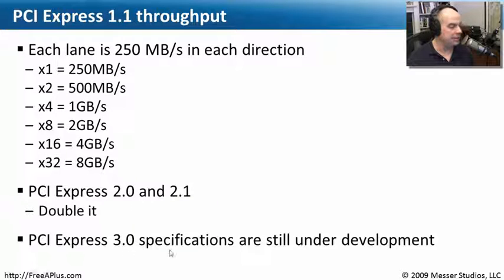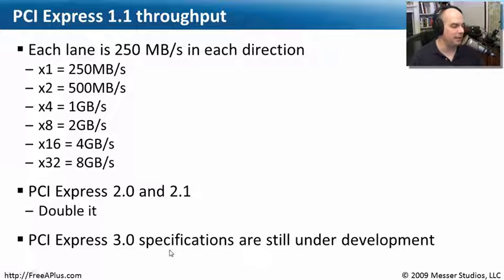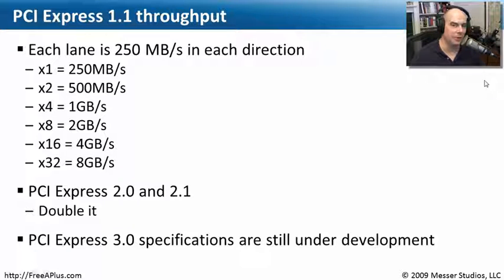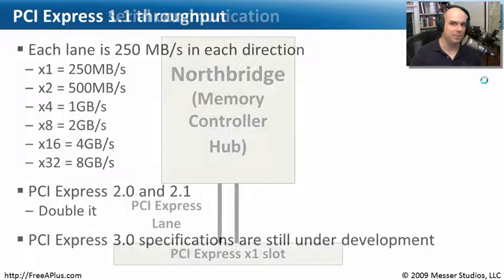There is a PCI Express 3.0, though it wasn't out quite yet when this video was made. But you can see the huge amounts of throughput available. When you get 16 gigabytes per second transferred through a system with PCI Express 2.0 and 2.1, you're really moving quite a bit of traffic through your system.